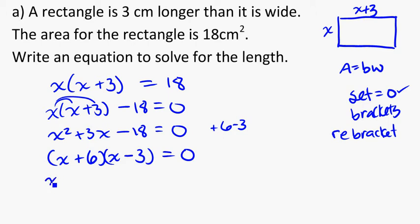And now I'm going to solve for these. So x plus 6 equals 0, or x minus 3 equals 0. So doing the opposites, x is equal to negative 6, or x is equal to 3.